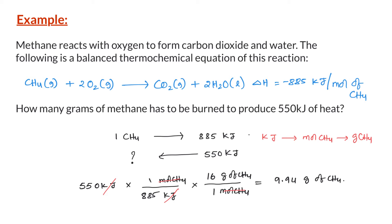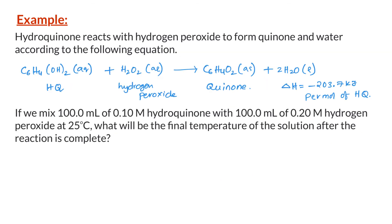This is the amount of methane that we need to burn in order to produce 550 kilojoules of heat. Example 2: Hydroquinone reacts with hydrogen peroxide to form quinone and water. 1 mole of hydroquinone reacts with 1 mole of hydrogen peroxide to form 1 mole of quinone and 2 moles of water. The enthalpy change for this reaction is minus 203.7 kilojoules per mole of hydroquinone consumed.